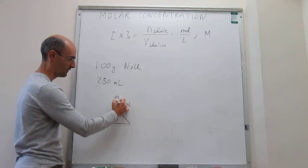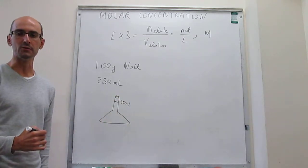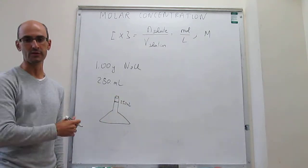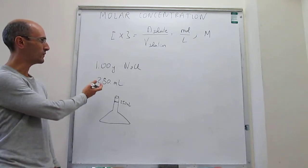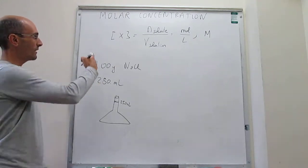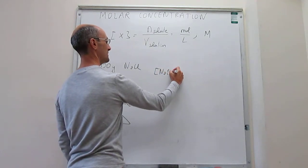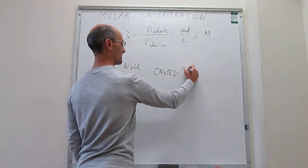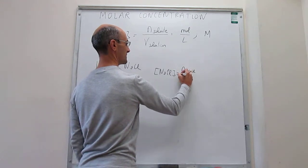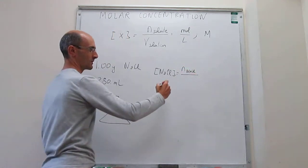So the question would be, what would be the molar concentration of the solution that you can prepare using these numbers? If we take the equation there, the molar concentration is going to be equal to the number of moles of sodium chloride, which is the solute in this case, over the volume of the solution.